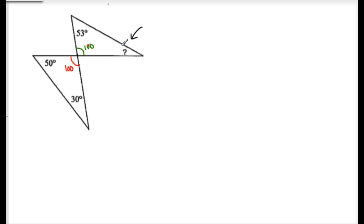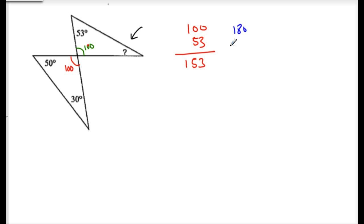What's the missing angle here? You add 100 and 53 to get 153, then do 180 minus 153. Add those two angles, then subtract from 180, and you get 27. So our missing angle here is 27 degrees.